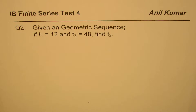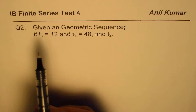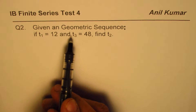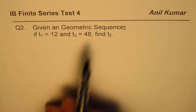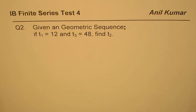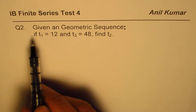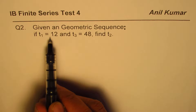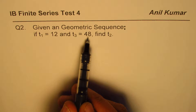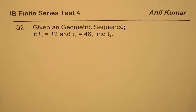I'm Adil Kumar. Here is question number two from the test paper on finite series — these are practice questions for you. The question is: you are given a geometric sequence where t1 is 12 and t3 is 48. You need to find t2. In a geometric sequence, if t1 is 12 and t3 is 48, find t2. You can pause the video and answer the question.